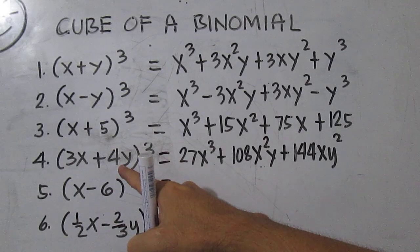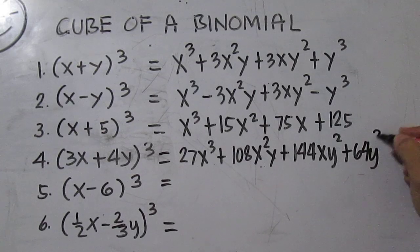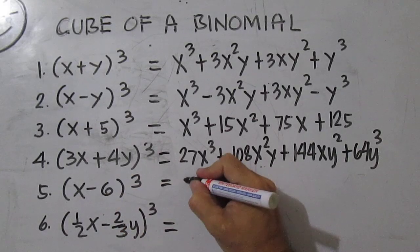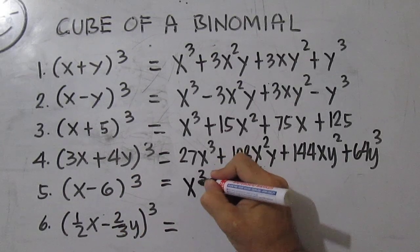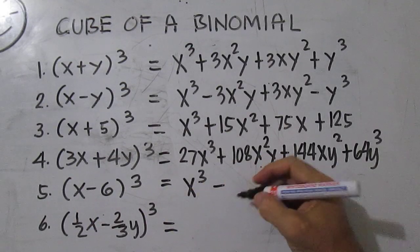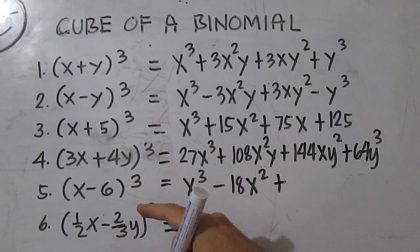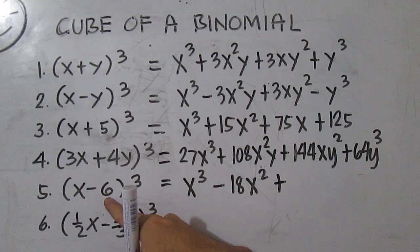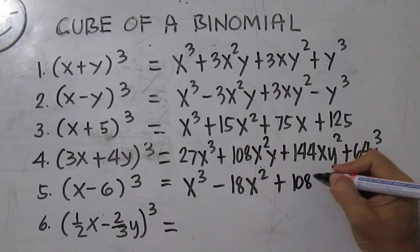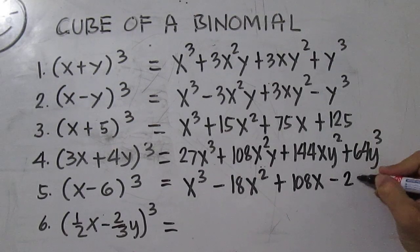Number 5 is x cubed minus 18x squared plus 36x times 3 equals 108x, then minus 216.